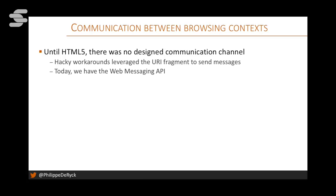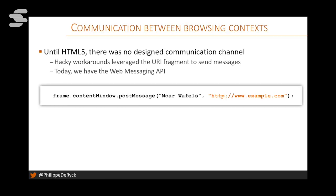The Web Messaging API provides the 'postMessage' function where you pass a message or object to a different context. You must specify where you want to send it — and that's an origin. You tell the browser: I'm sending this message to this frame, and I believe it to be from this origin. The reason is that if the frame has navigated itself to evil.com and you're sending sensitive messages, you don't want that message to end up with evil.com. So you tell the browser: if this frame has this origin, then send the message to it.